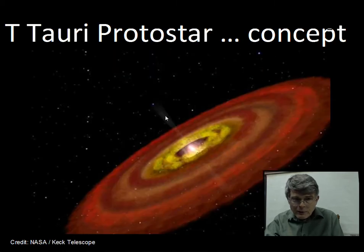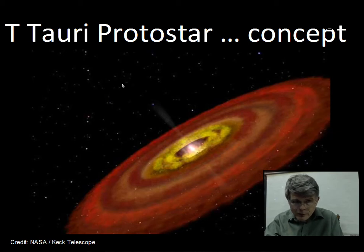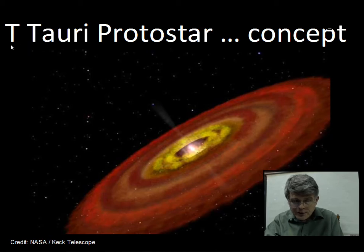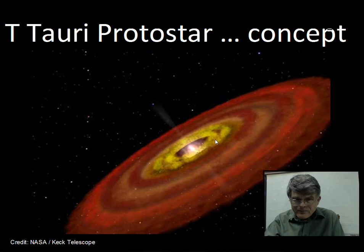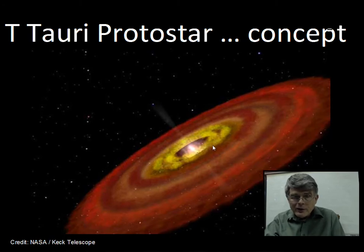The T Tauri protostars are variable stars — the first one discovered in the constellation of Taurus — and this designation tells astronomers it's a variable star. This is a drawing, not a photograph; we don't yet have capability for imaging these discs, although it's getting closer.